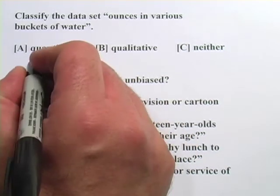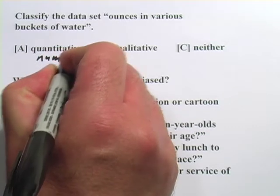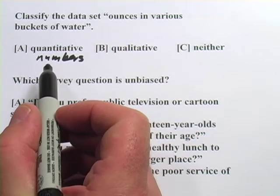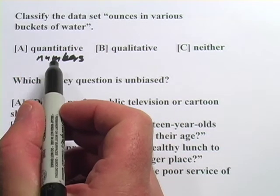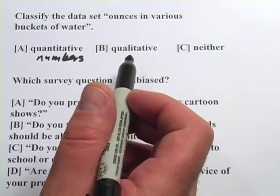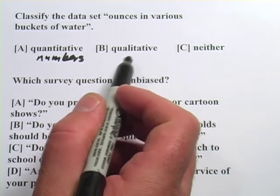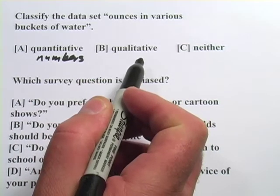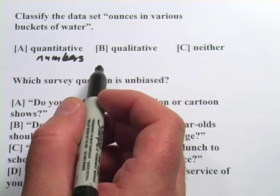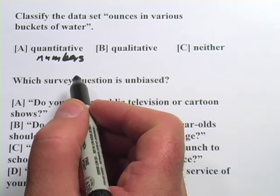Numbers would be quantitative. Quantity means amount or number, so that's a good way to remember that. Qualitative is some other way. If you say something is lousy, that's qualitative. If you say I give it two out of five stars, that's quantitative because numbers were involved.